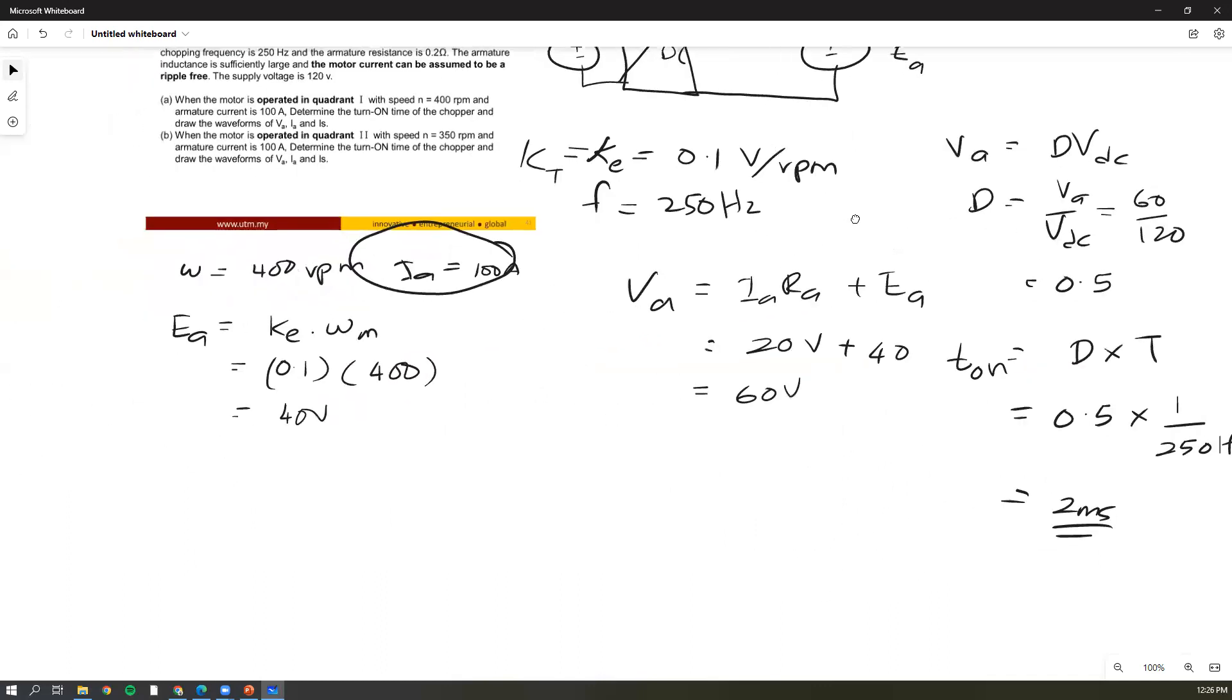It requires you to draw, so the drawing for Va must be Vdc, this one must be 120 volts, and then you have this one. This one must be labeled, so this one is your 4 milliseconds. This one is your t-on, you must label it, so this is 2 milliseconds. That is how we do the labeling.